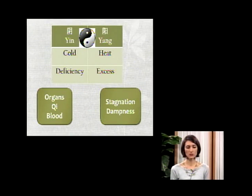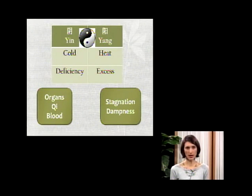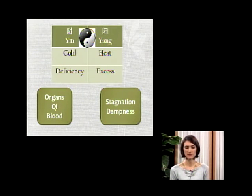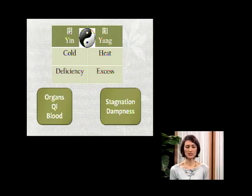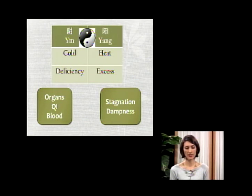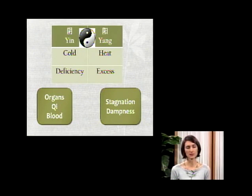We can also talk about qi — the energy in the body — and blood. For example, the qi may be deficient or you may have heat in the blood. The last two terms we discussed last time were stagnation and dampness. Stagnation is an idea of poor circulation in the body, and dampness is an idea of poor water metabolism, creating a stickiness, a sticky environment in the body.